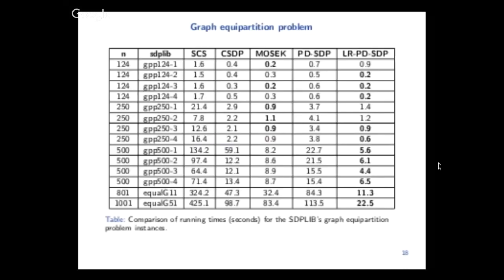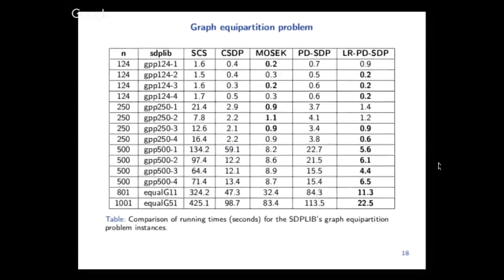These are some results regarding graph partition, which is basically a max cut. You can see that when the dimension of the problem grows, our solver, which is here, starts to be way faster than the others, like even first-order or interior points.